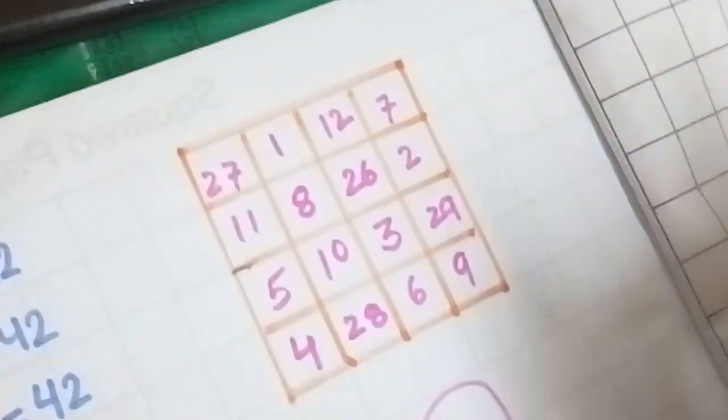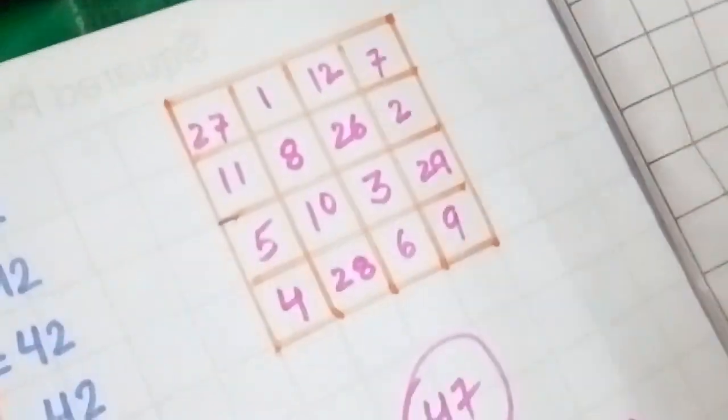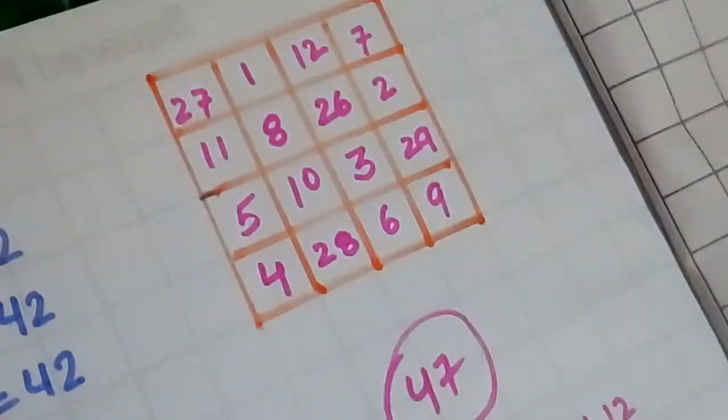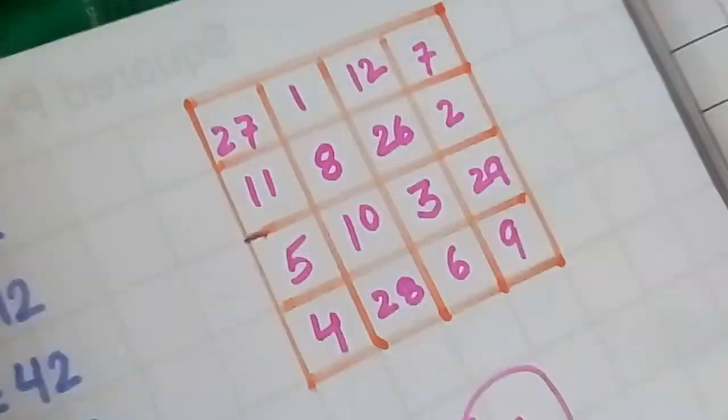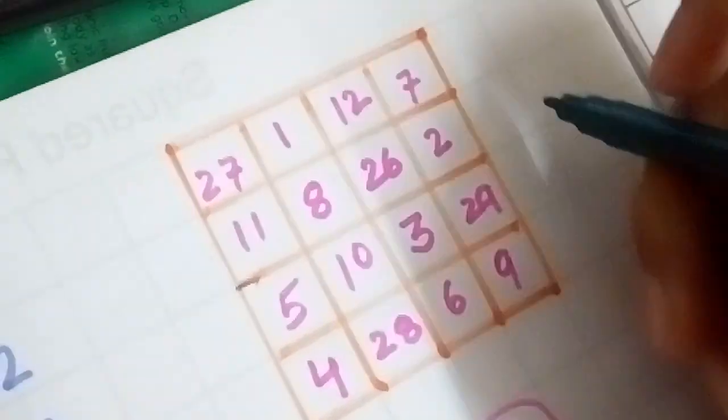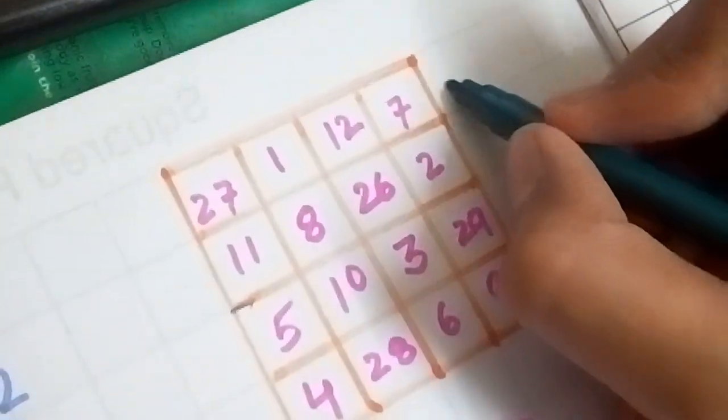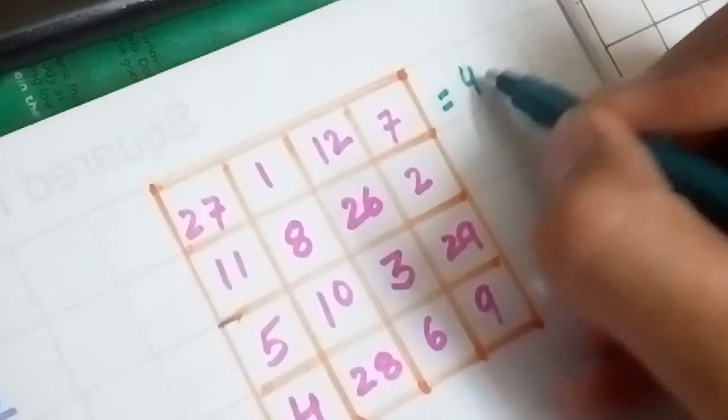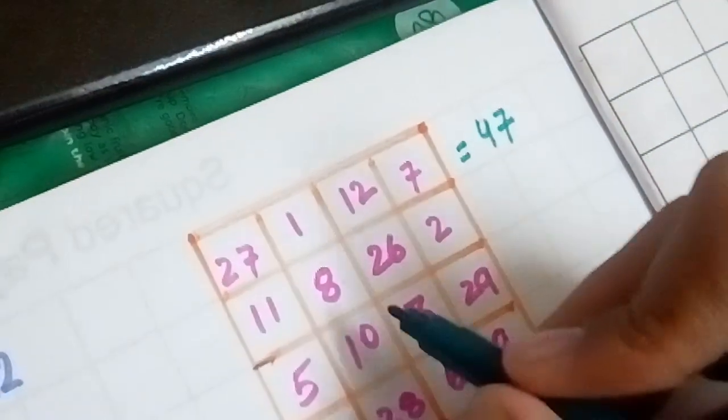So you can see that the magic square is easily completed. And now let's check it. So you can see that if we add the numbers horizontally for the first row, the sum is 47. Similarly in the second row you get 47. In the third row it's again 47, similarly in the fourth row.